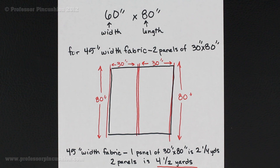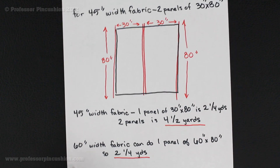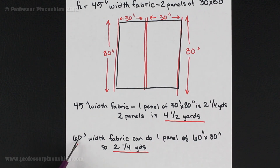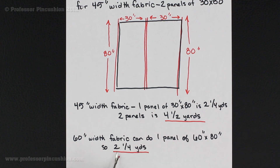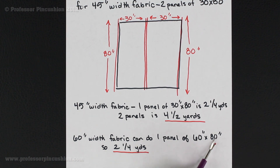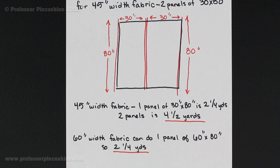That's going to be quite a bit of fabric for a large window, but that's what it takes. Now if you're using 60-inch width fabric, you can probably get away with just one panel of 60 by 80, so you don't have to break it into 2 panels. Then you would only need 2 and a quarter yards. This isn't going to cover every example you'll run across, but you just have to be creative and find a way to get the right amount of fabric to cover your window.